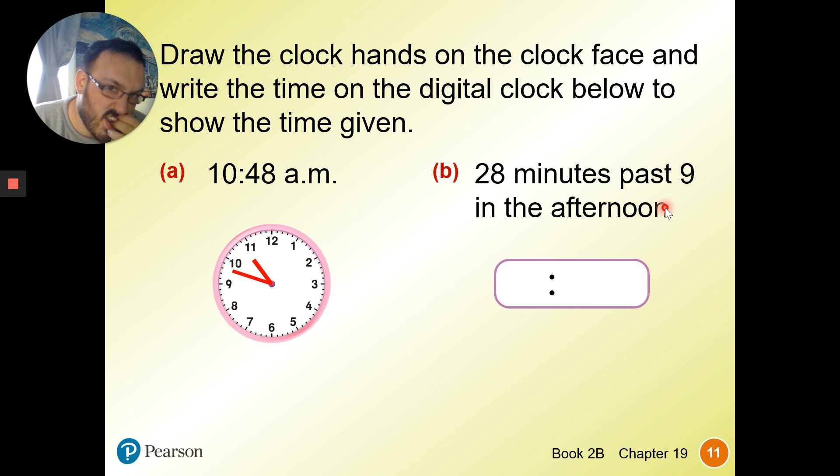Digital time, 28 minutes past nine. First of all, we can write 28 minutes past nine. We just write nine o'clock. And in the afternoon, we write p.m., 9:28 p.m.